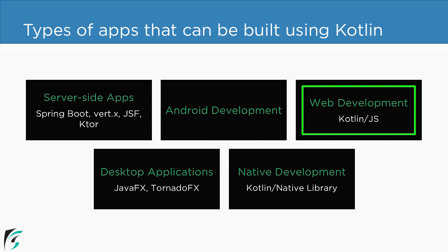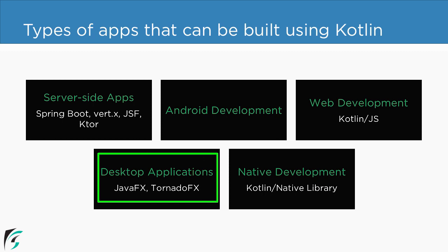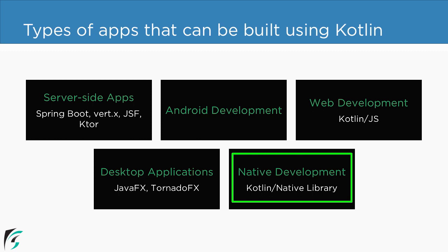Apart from backend and frontend, Kotlin can be effectively used to create desktop applications using JavaFX. There are even Kotlin-specific frameworks for desktop applications such as TornadoFX. Last but not least, Kotlin can be used to create native applications using the Kotlin Native library, which at the time of making this video is in preview. So you can see how important Kotlin is for any kind of application development.